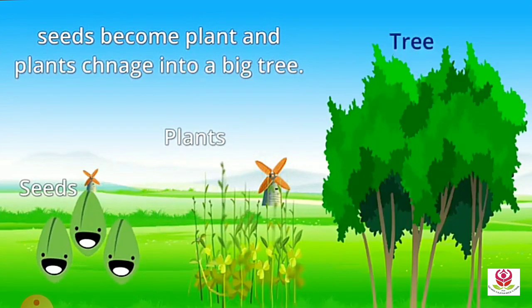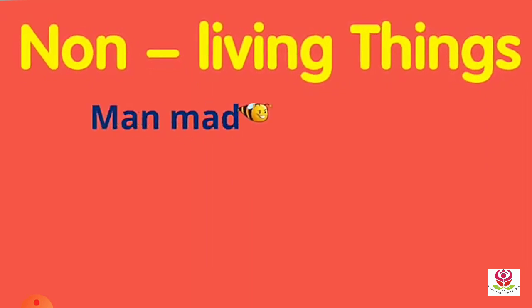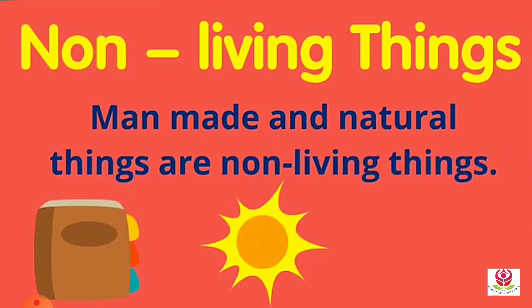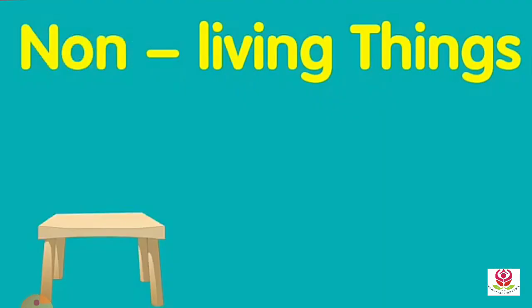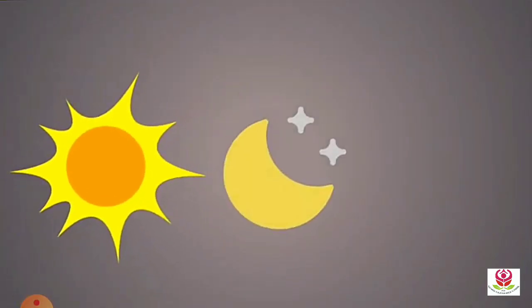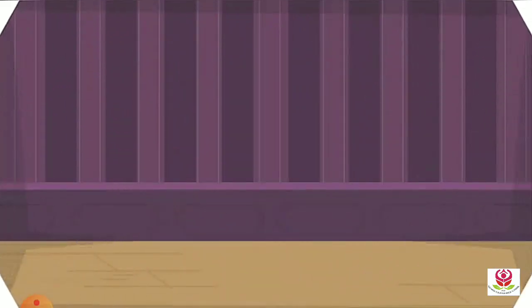Now let's talk about non-living things. Man-made and natural things can be non-living things. A ball, a table, a toy, and a car are man-made non-living things. The sun, the moon, and stone are natural resources but they are non-living things.